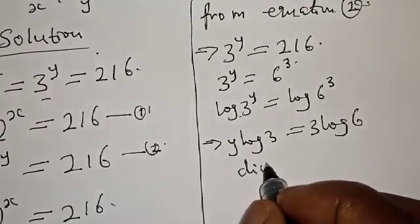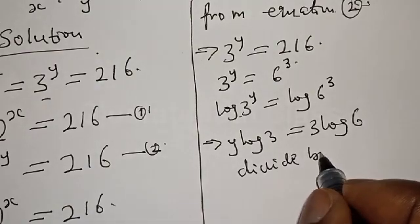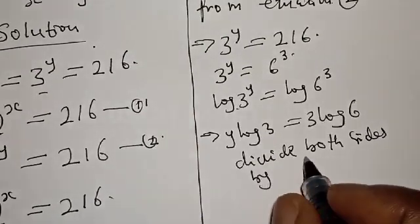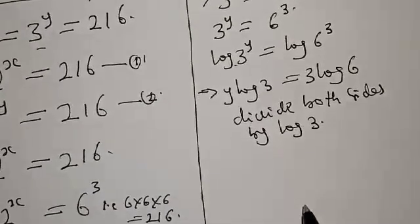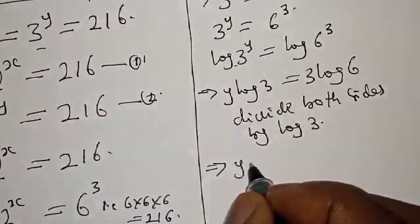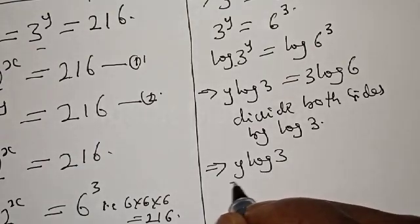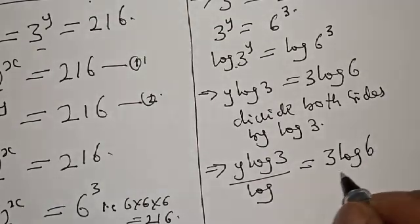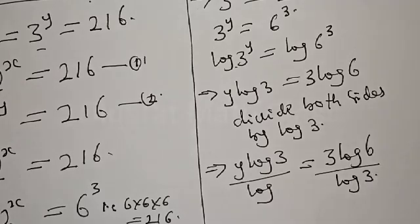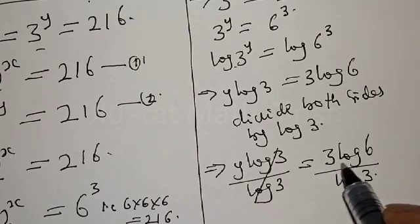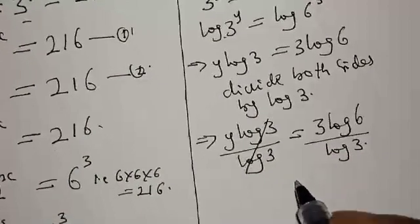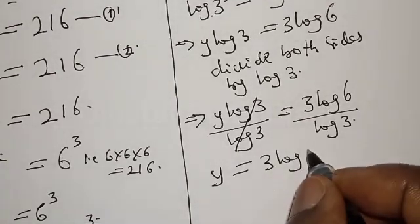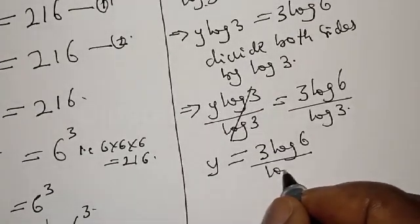Let's divide both sides by log 3. This implies that y log 3 over log 3 equals 3 log 6 over log 3. The log 3 cancels, and we are left with y equal to 3 log 6 over log 3.